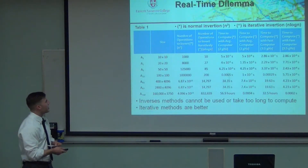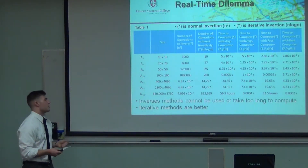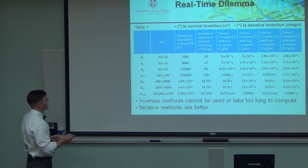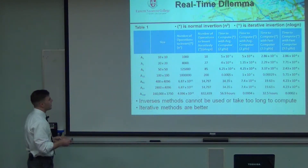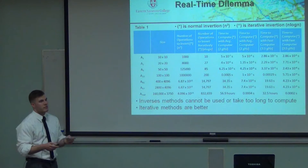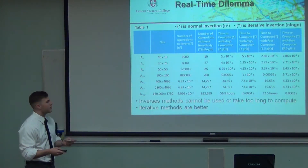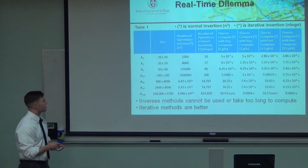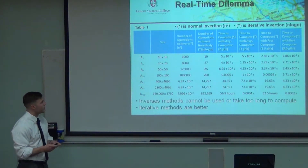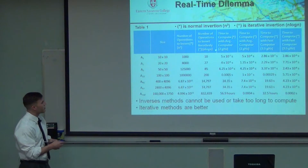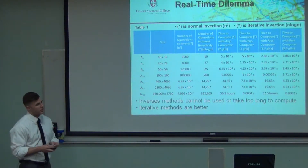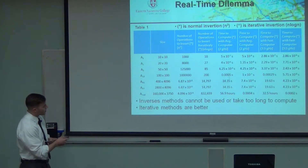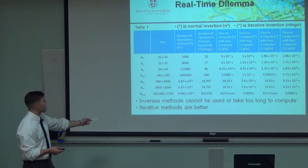Now, the real-time dilemma. Looking at this chart: these are our matrices — a simple 10 by 10. We're comparing the number of operations to invert directly versus to invert iteratively. Direct inversion scales as n cubed, where n is the largest dimension of the matrix. Iteratively, it's only n log n. These numbers are clearly bigger than those, and get much bigger as we scale to our real cases.